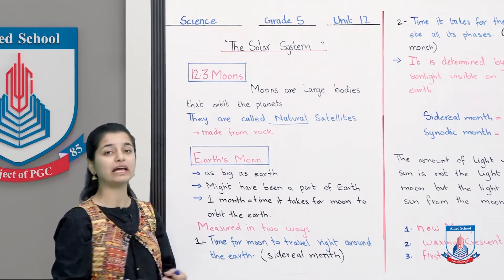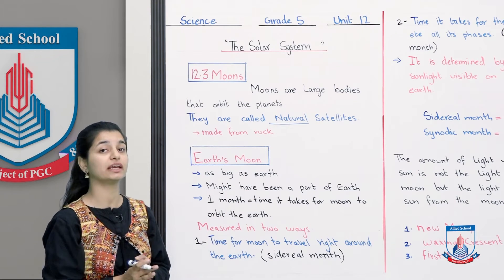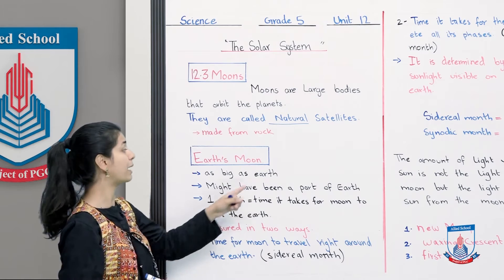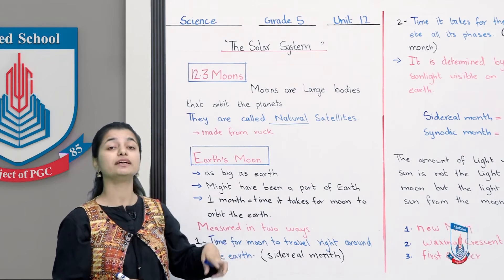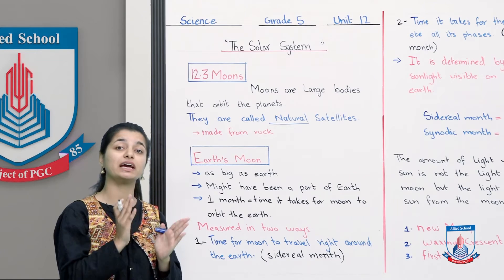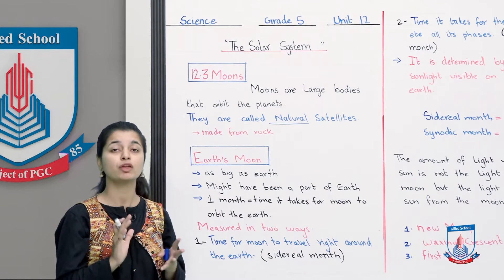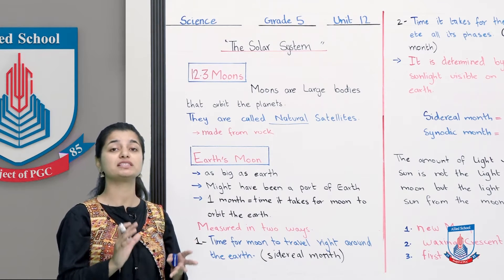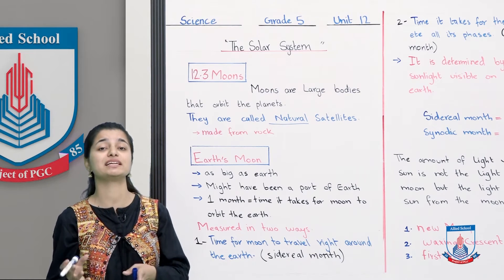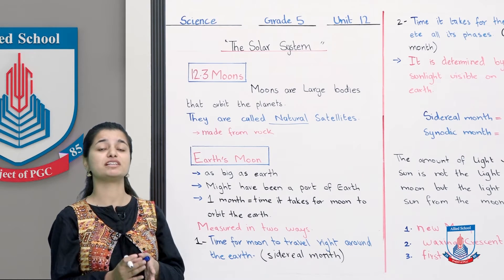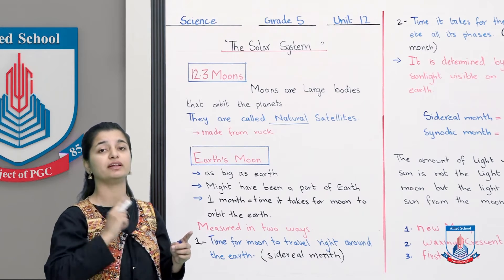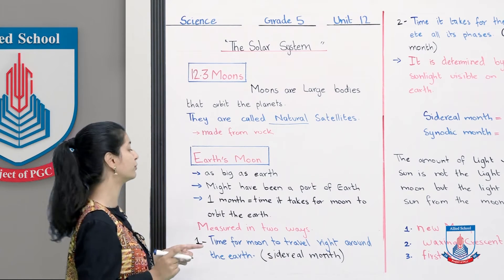Earth's moon — as big as earth — woh utna hi bada hai jitna ki earth ka size hai, bilkul waisa hi uska size hai. Might have been a part of the earth. Yahan tak kuch log yeh bhi maante hai ki shayad jo humaara moon hai, woh pehle earth ka hi hissa tha. Iske saath juda tha, aur phir earth ki kisi aur cheez ke saath collision hoi, kisi aur planet ke saath, kisi aur celestial body ke saath, aur uski wajah se moon jaise woh alag ho gaya, earth alag ho gai, aur ab moon earth ke girth roam kerta hai.